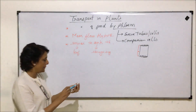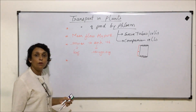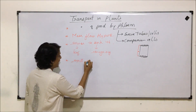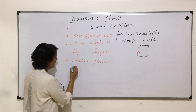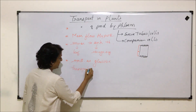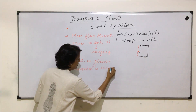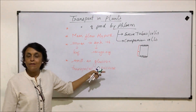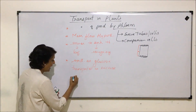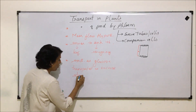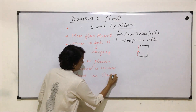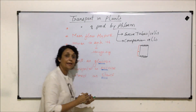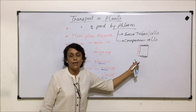One important thing to recall: carbohydrate is synthesized as glucose, then it is transported as sucrose. Glucose is a highly reactive reducing sugar; sucrose is a disaccharide and non-reactive, so it is easier to transport a non-reactive molecule. Then this carbohydrate is stored as starch, which is a polysaccharide. So it is synthesized as glucose, transported as sucrose, and stored as starch.